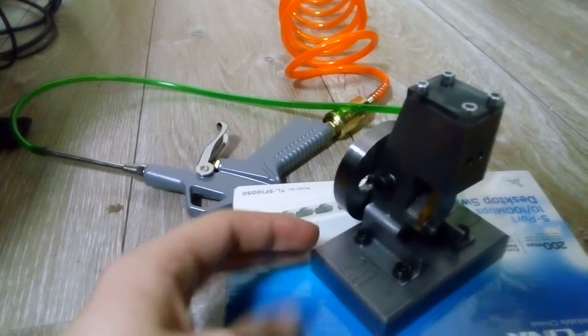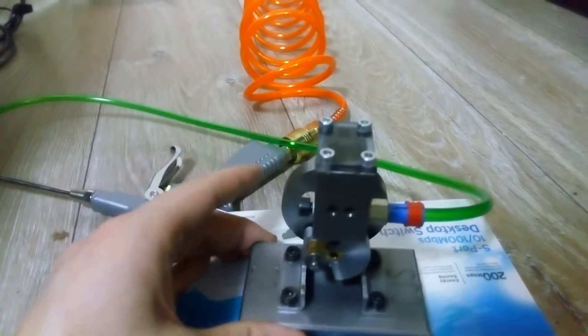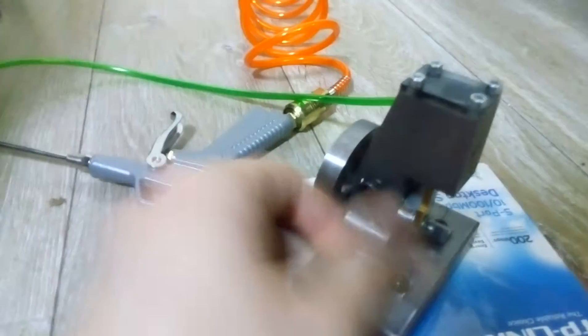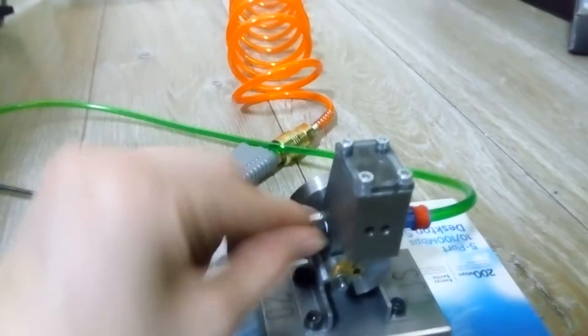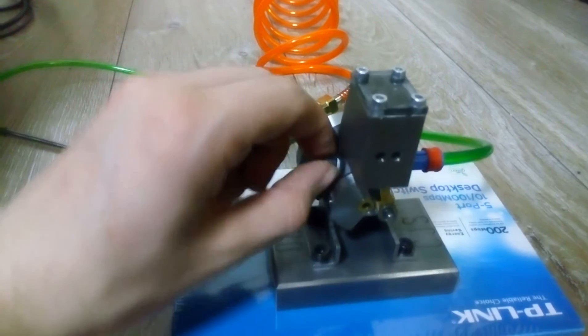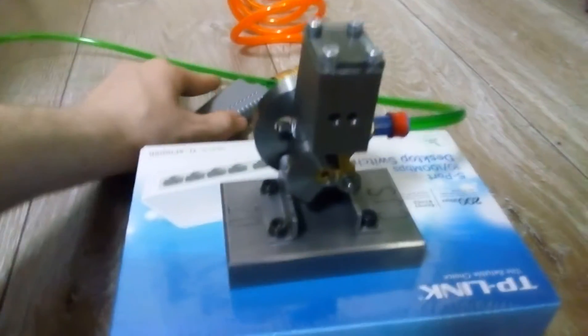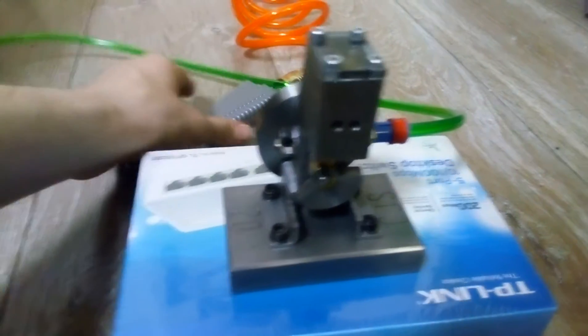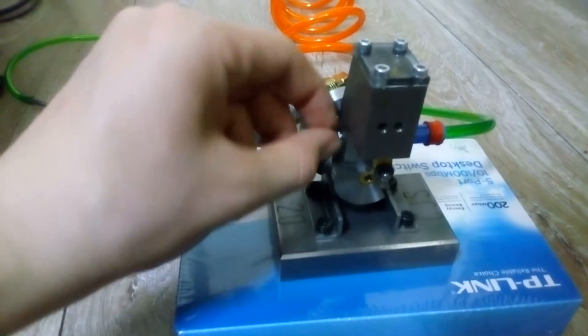How do you adjust the throttle on this engine? We have a screw. Turn that in and the engine runs a lot slower. Turn it out and the engine will run a lot faster and louder.